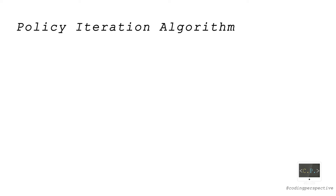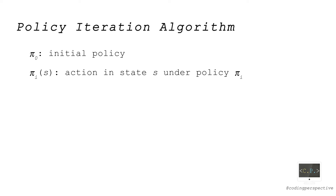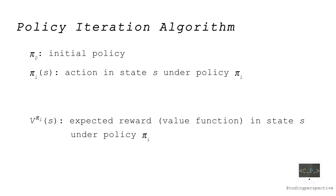Policy iteration is an iterative algorithm and consists of three steps. In the first step, we initialize a policy pi_0 with some feasible actions. Then at any iteration i, pi_i denotes some policy, with pi_i(S) being the action in state S under policy pi_i. We define v^{pi_i}(S) as the expected reward, or the value function, in state S under policy pi_i.